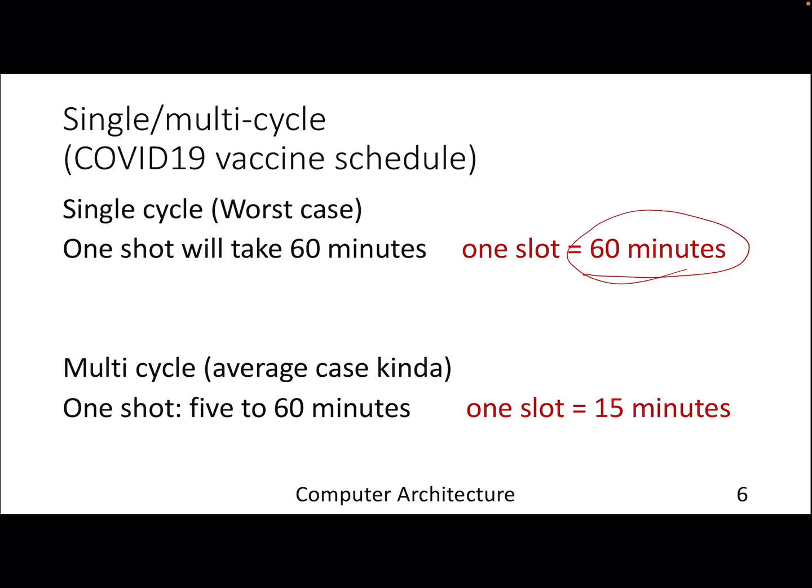Multi-cycle, what you can assume is: no, I don't need 60 minutes. Instead I will need multiple 15 minute slots—first 15 minutes maybe for verification one, second for verification two, and so on. This is kind of an average case schedule where we try to make sure not everyone is waiting for one hour, and on average we'll be able to schedule things at a 15 minute interval.